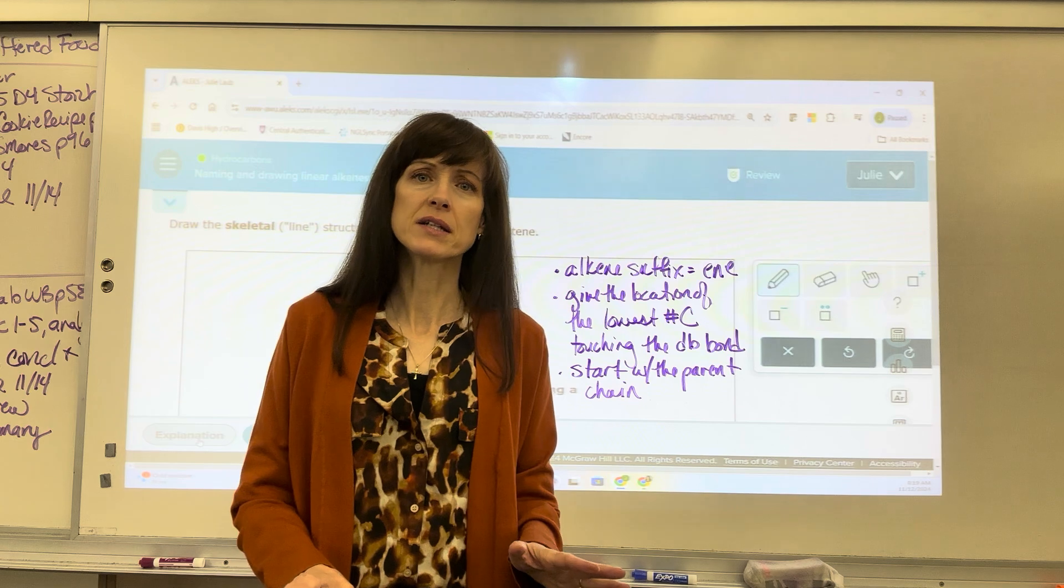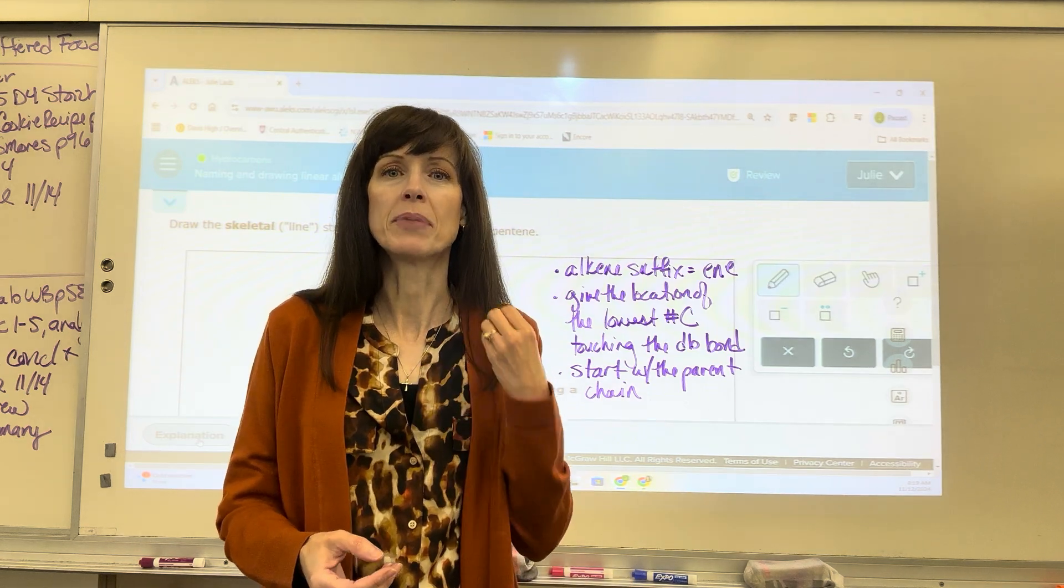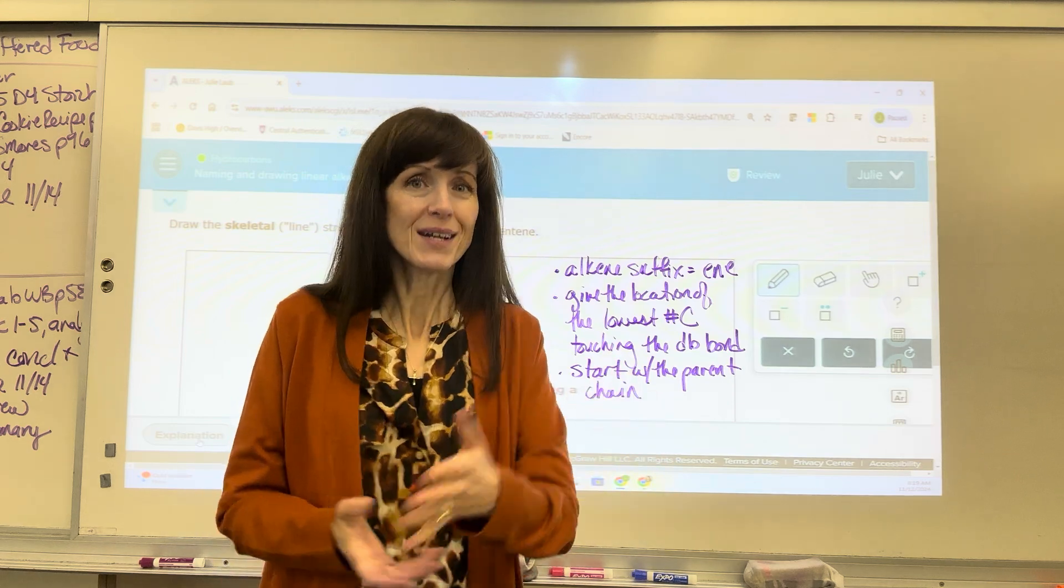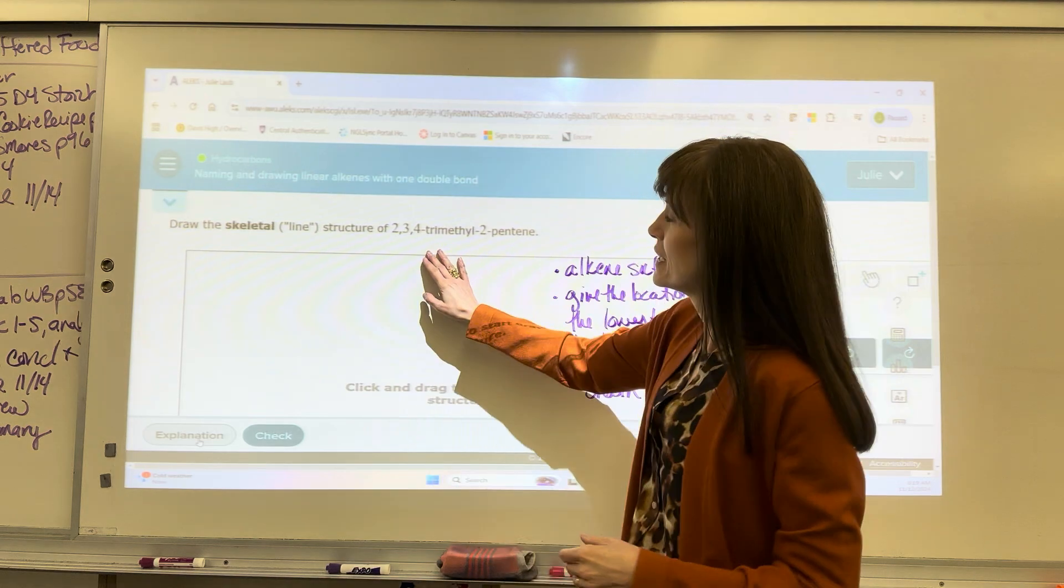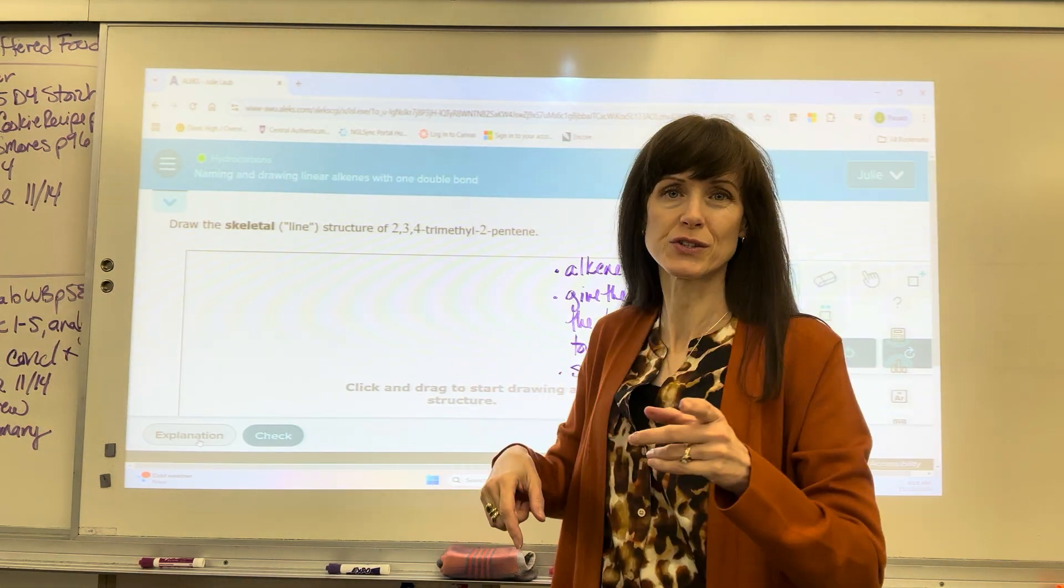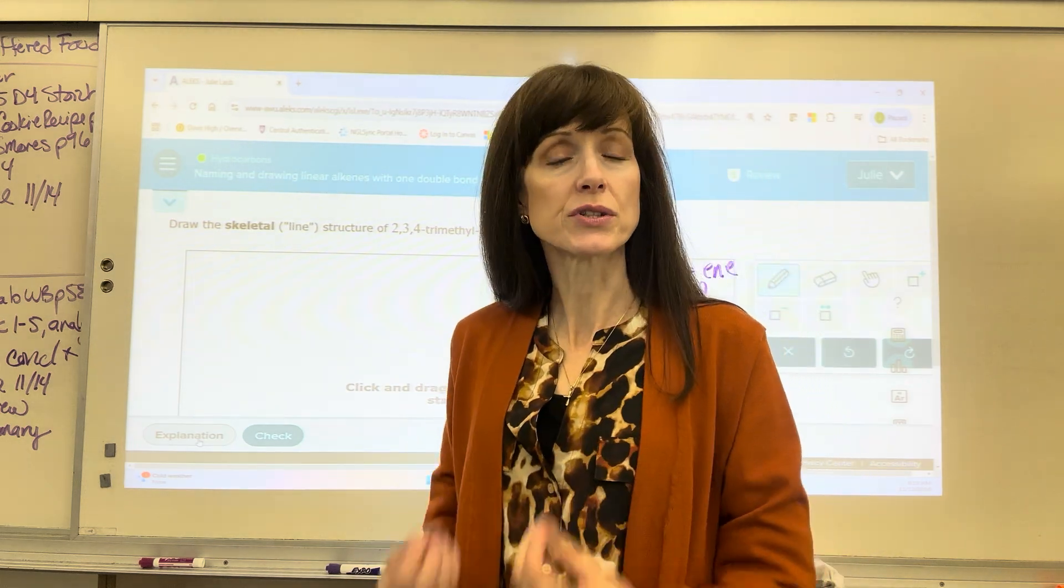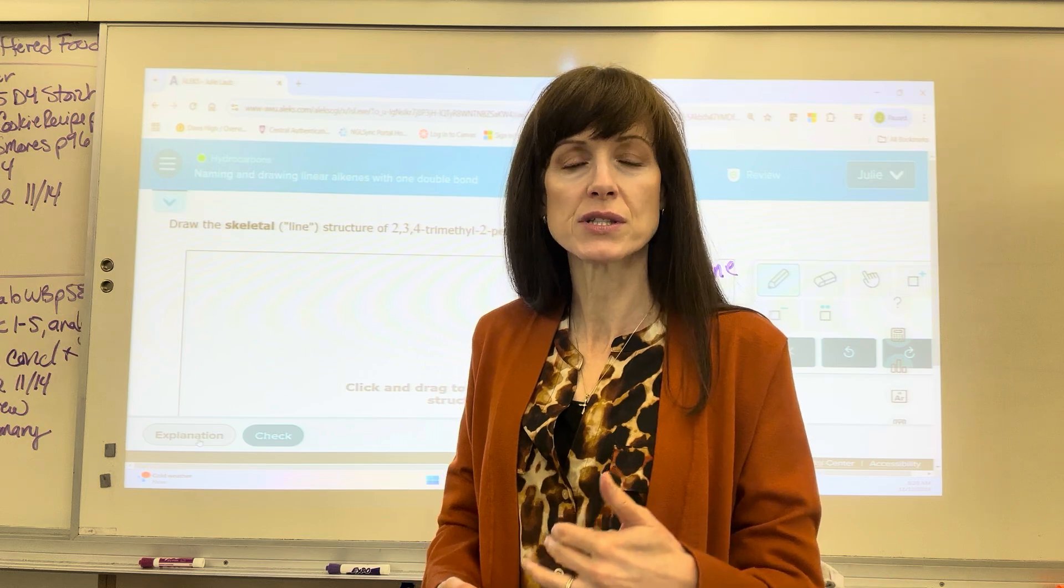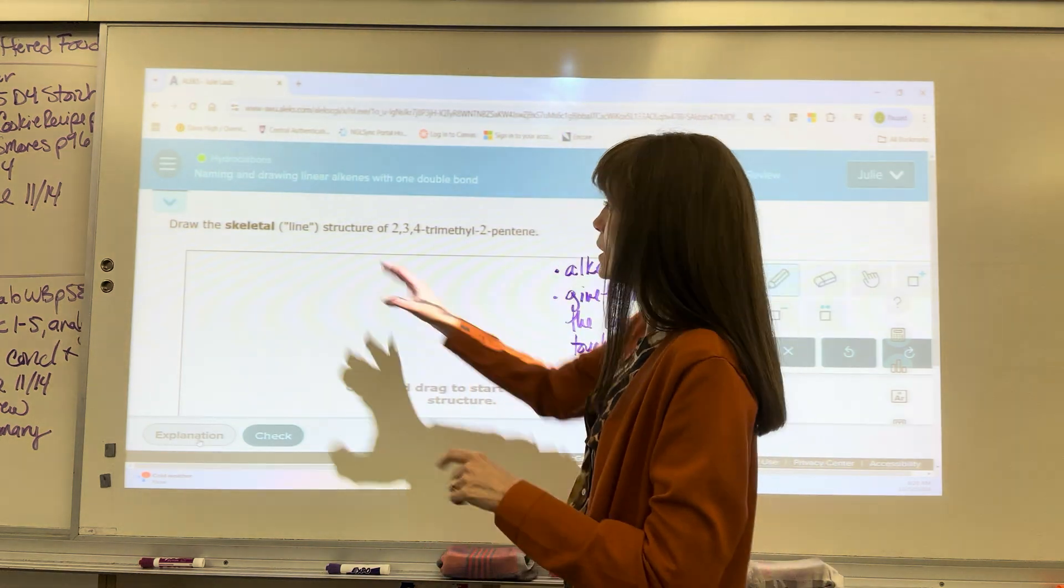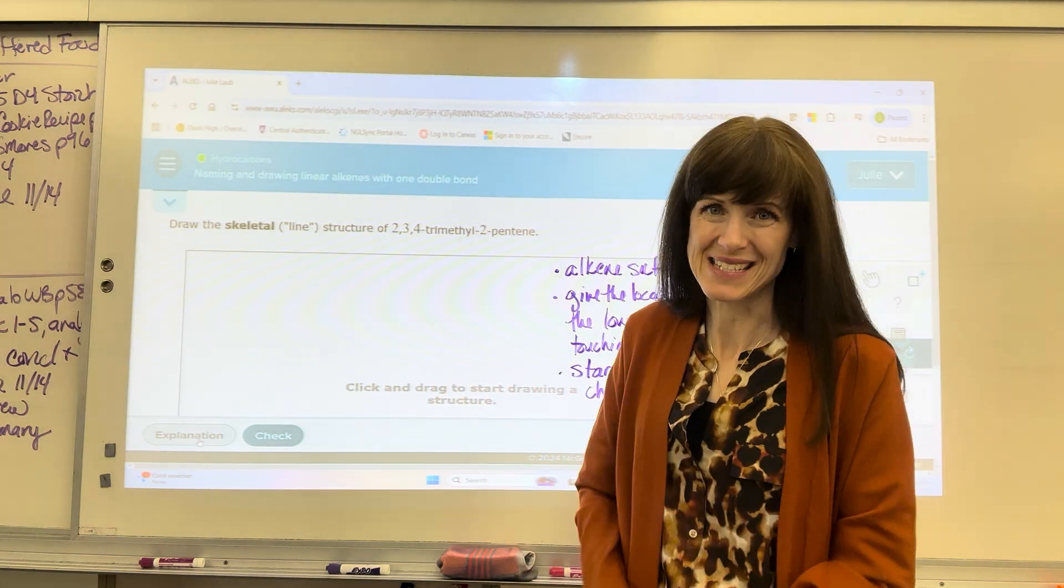Next, when you're drawing this or writing it, I always have my students start with the parent chain. I think it's easiest if you start with that parent chain and then you can build off of it. So here's a problem for us. It says draw the skeletal structure. Remember the skeletal structure is when we use lines. The vertices indicate a carbon and it's understood that each carbon has enough hydrogens to fulfill four bonds around each carbon.